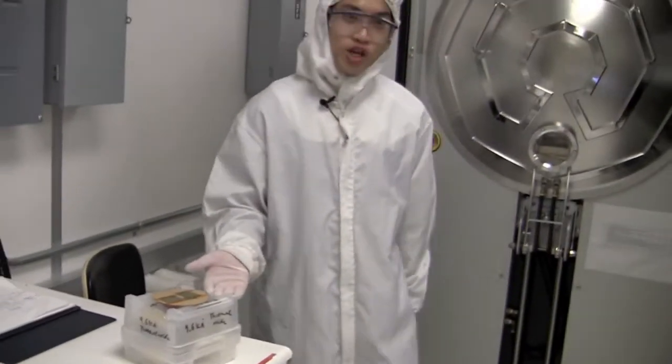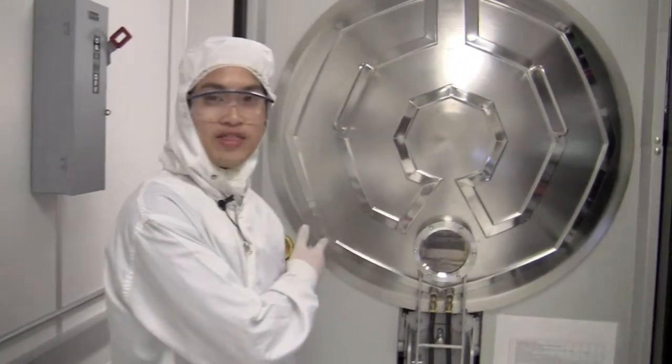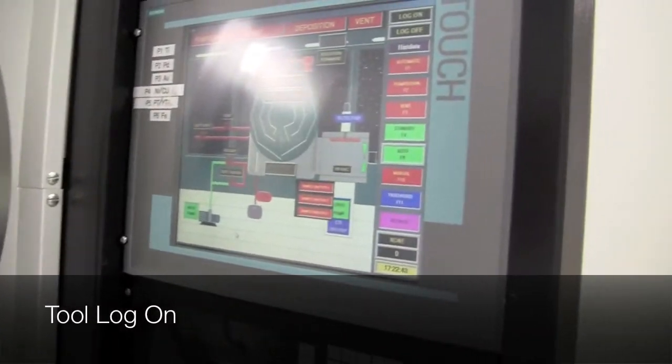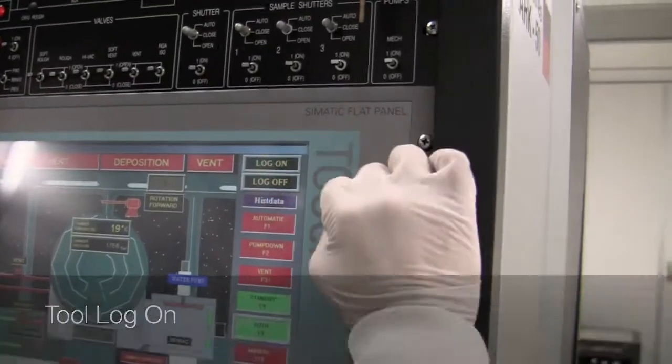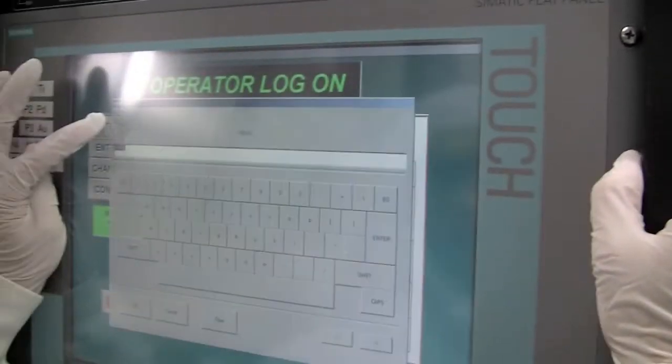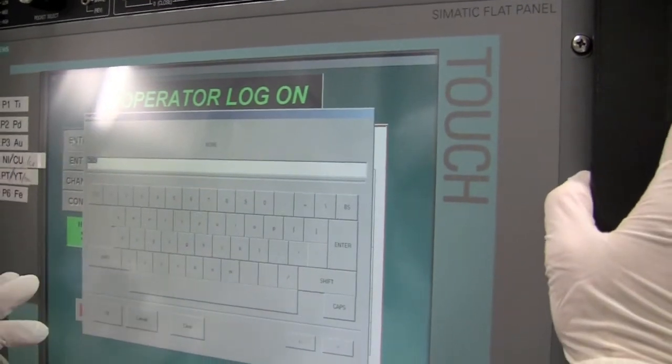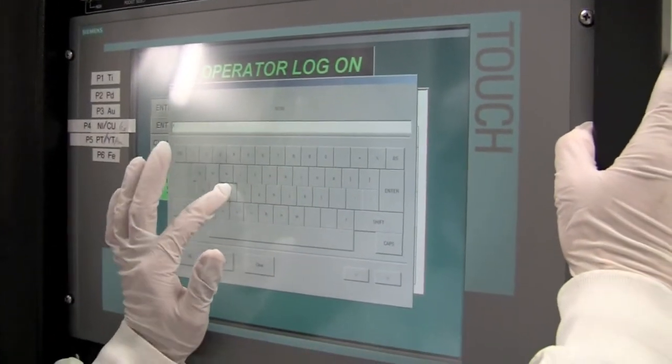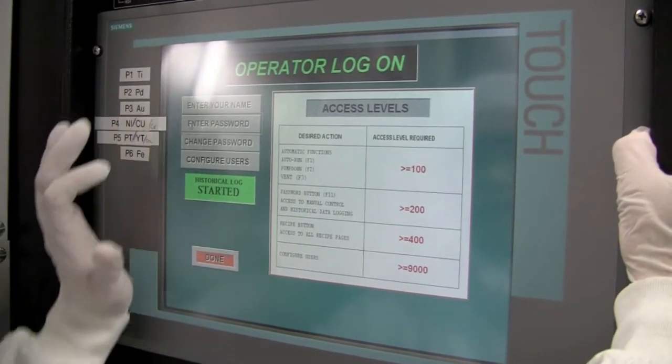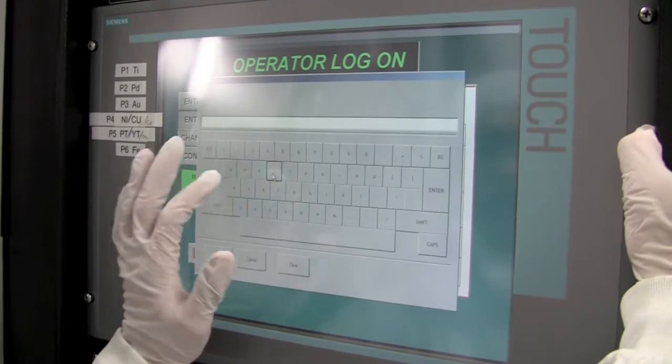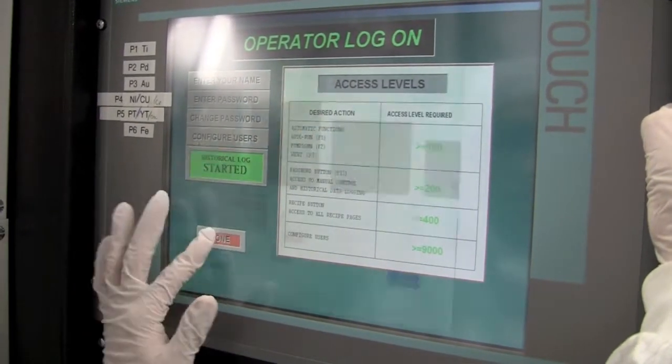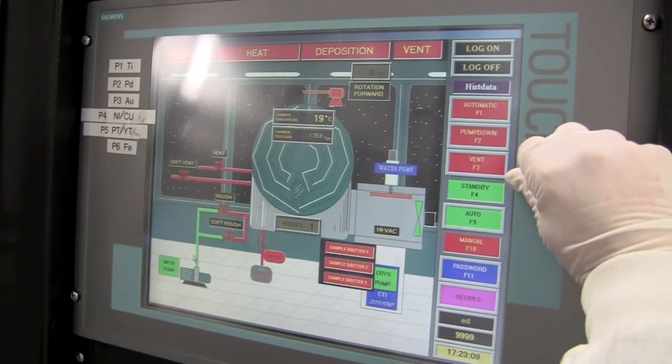Now that our wafers are ready to be loaded we can come here and vent the chamber to open the door. In order to do so we first must log on to the tool itself. I'm going to click log on and enter my name, which is going to be ed. Then you're going to want to enter the password, which is just simply r-a-g. Then you can click done and now you can see that these options are now available to select.